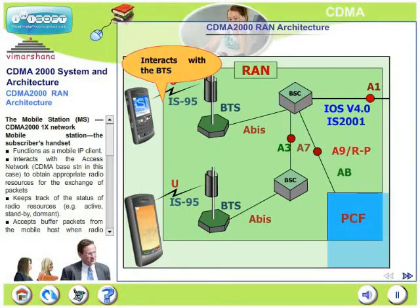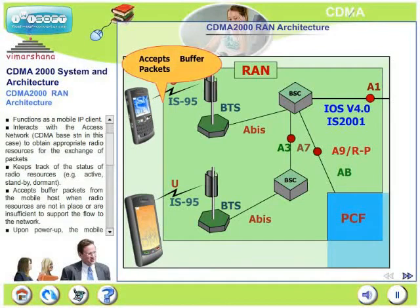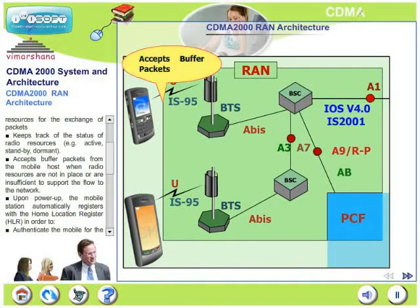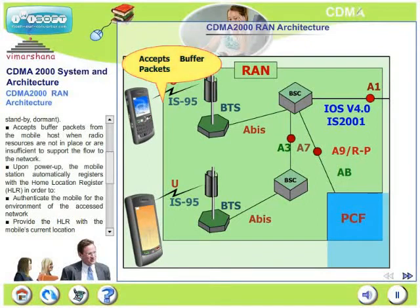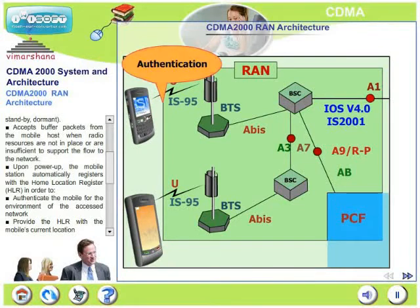The mobile station keeps track of the status of the radio resources and accepts buffered packets from the mobile host when radio resources are not in place or not sufficient to support the flow of the network. Upon power up, the mobile station automatically registers with the HLR in order to authenticate the mobile and to provide the HLR with the mobile's current location.